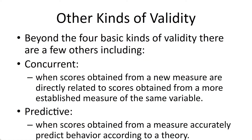There are other validity types worth briefly mentioning. Concurrent validity is where scores from a new measure are directly related to scores from previously established measures. And predictive validity is where scores from a measure accurately predict behavior according to a theory.